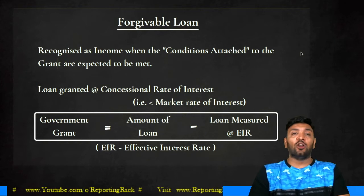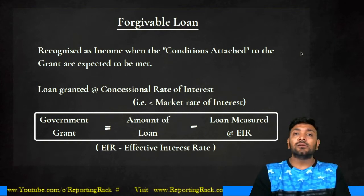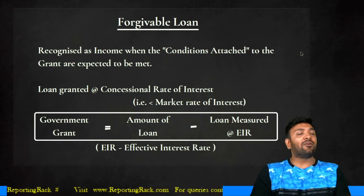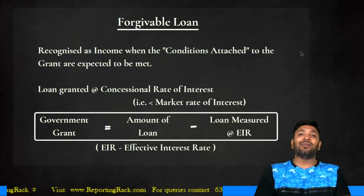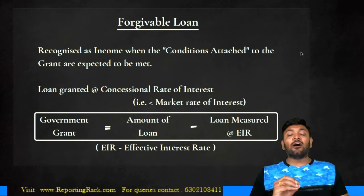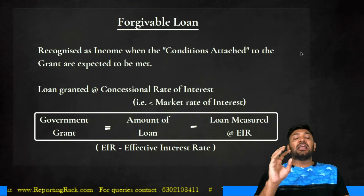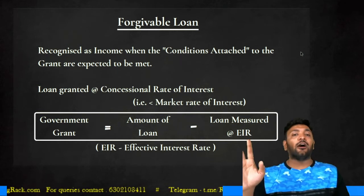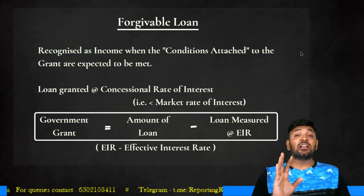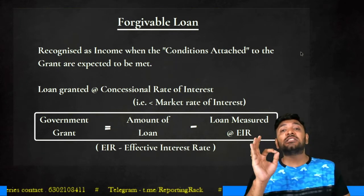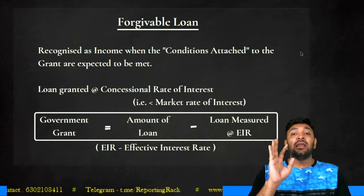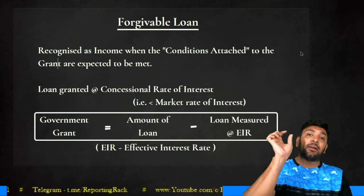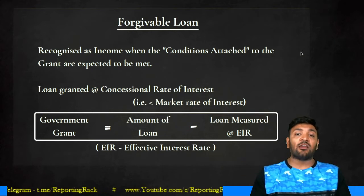Forgivable loans are loans that will be waived off if certain conditions are met. For example, if an enterprise is recognized as a small and medium enterprise and the loan outstanding is less than 10 lakhs, the loan will be waived off. In this case, recognize the loan outstanding amount as income in P&L if the conditions attached to the loan waiver have been met.